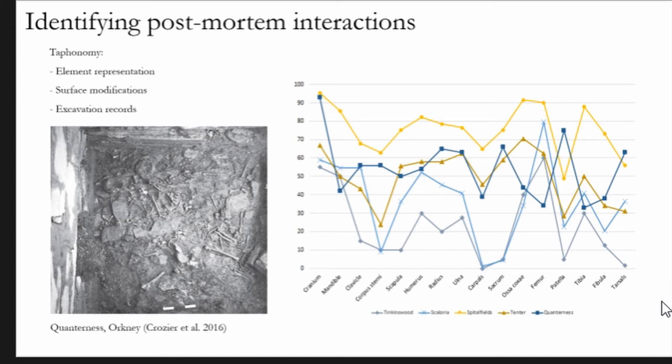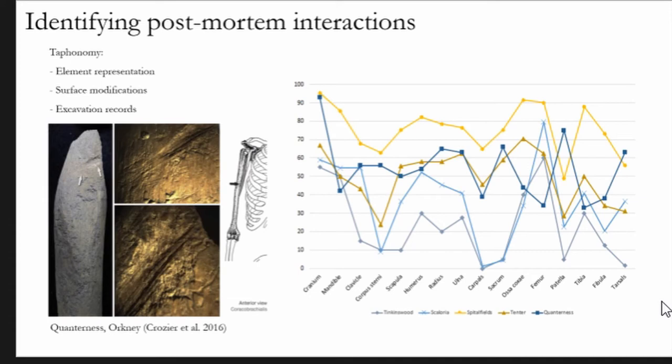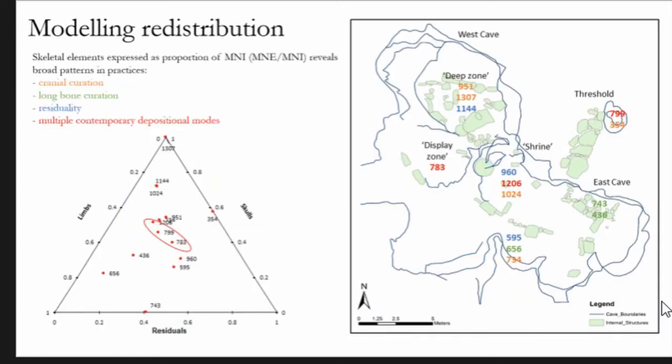Now ideally, this model of element representation should be contextualized by looking at modification to the surface of the bone and also by looking at excavation records to try and pin down the particular types of funerary practices that we can see from the deposits. So this is what I've been looking at at the Hal Saflieni Hypogeum. What I've done is divided the skeleton into three main types of bones: long bones, the skull—cranium and mandible—and residual bones, so the small bones of the hand and feet and also of the axial skeleton. I've taken the bone from each of these types which is represented highest and put it into this ternary plot.